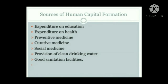The various forms of health expenditure include: preventive medicine, known as vaccination; curative medicine, meaning medical intervention during illness; and social medicine, which refers to the spread of health literacy to the people. Provision of clean drinking water is necessary for all people. And lastly, good sanitation facilities are needed for everyone to become a healthy human resource.